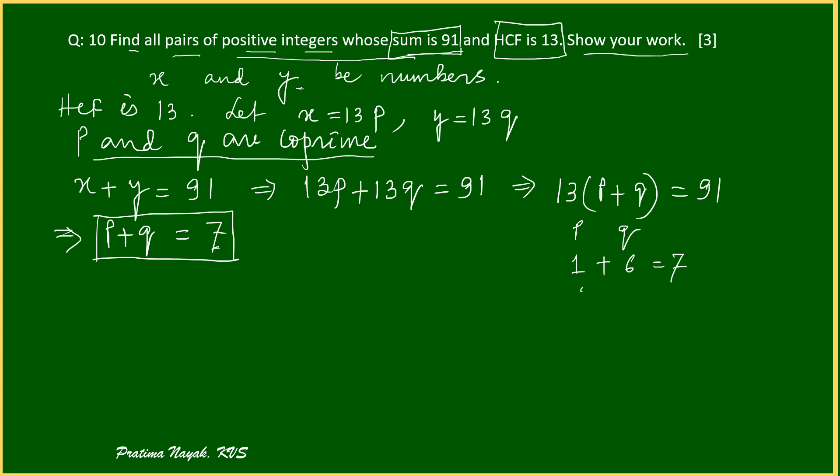So it can be P and Q: either of them can be 1 and 6 because 1 plus 6 is equal to 7. Can be 2 and 5. Or 3 and 4. So is there any other possibilities? No. So P is 1, Q is 6. One option.